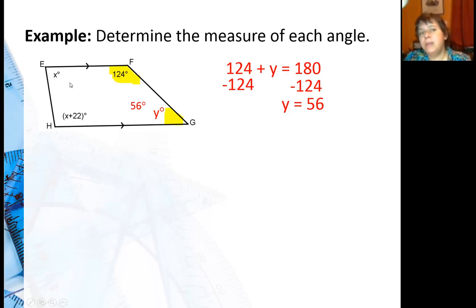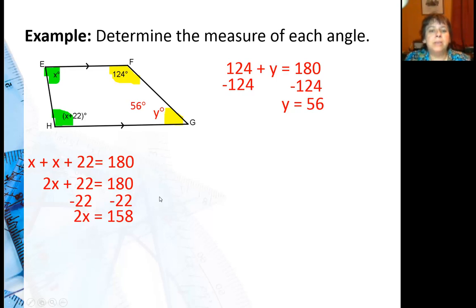Now that doesn't really tell me a lot about the other two because I could slant these different ways and it would still be a trapezoid. But the one thing that is true is that these two angles also have to be supplementary. So I'm going to say X plus X plus 22 is 180, or 2X plus 22 is 180. Subtracting 22 from both sides, I get 2X equals 158. Dividing both sides by 2, then I get X is 79 degrees.